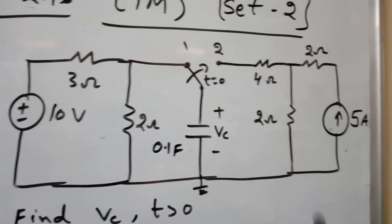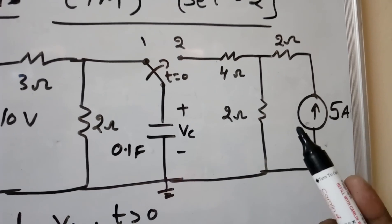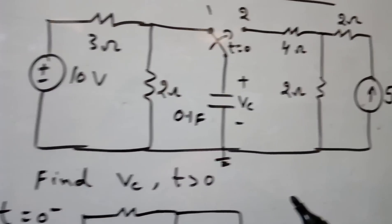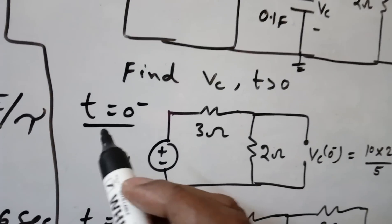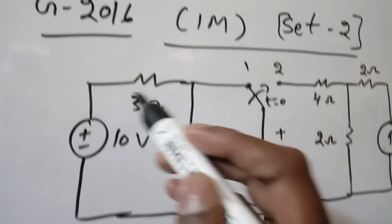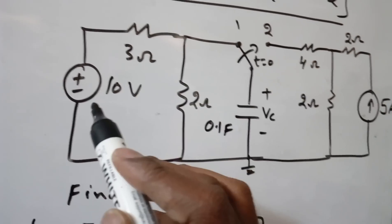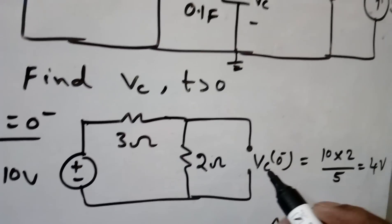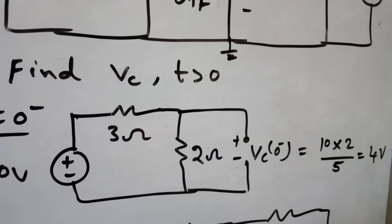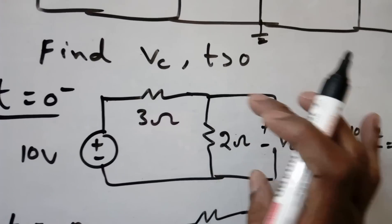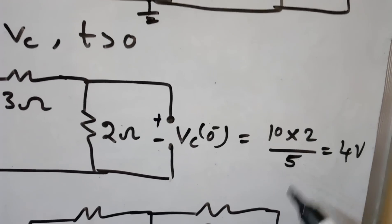When the switch is at position 1, the source is connected; at position 2, a 5-ampere source acts. So we use the with-source formula. At t = 0⁻, the switch is at position 1 — the 10-volt source has been applied long enough that the capacitor reaches steady state and becomes an open circuit. We find the voltage across the 2 ohm resistor using voltage division: VC(0⁻) = 10 × (2/5) = 4 volts.